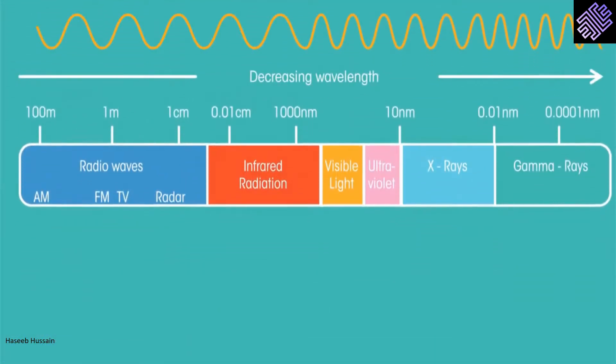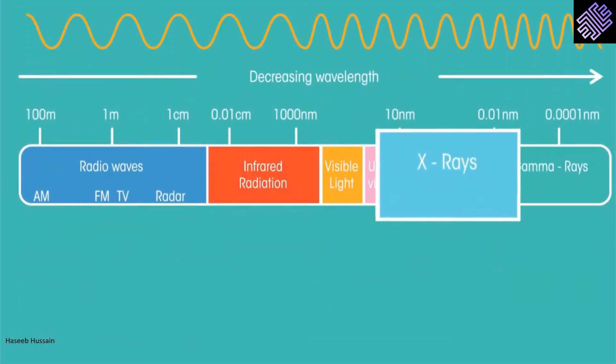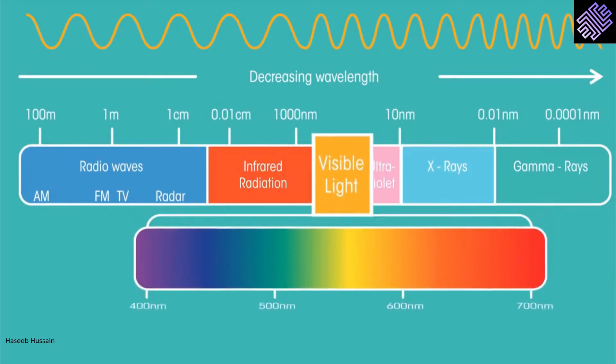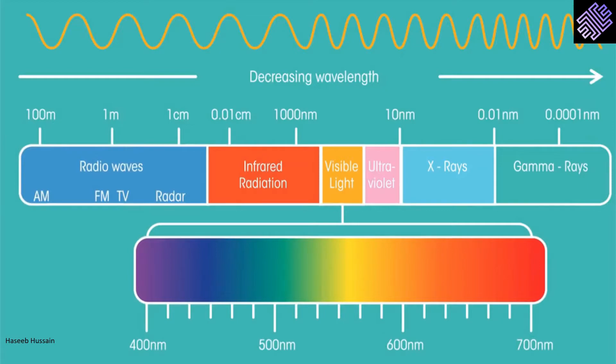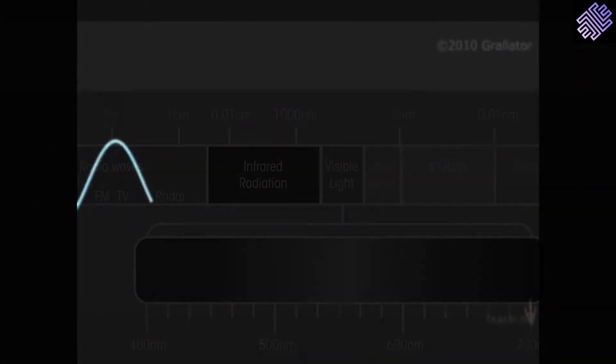Wavelength can vary hugely in size. X-rays are very short, visible light is here and FM radio waves are much longer.